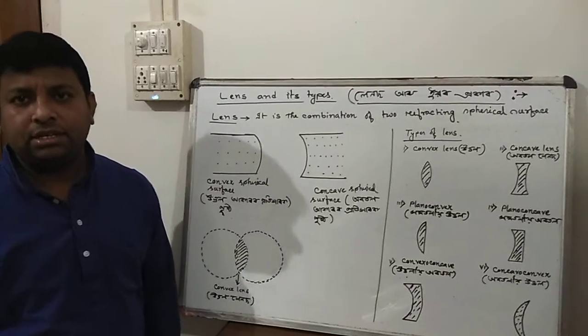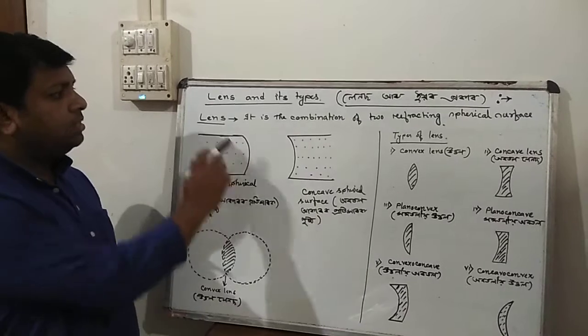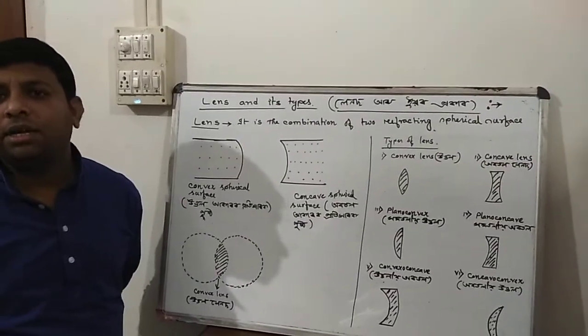The Lens. What is Lens? Lens is what? The Lens is a combination of two reflecting spherical surfaces.